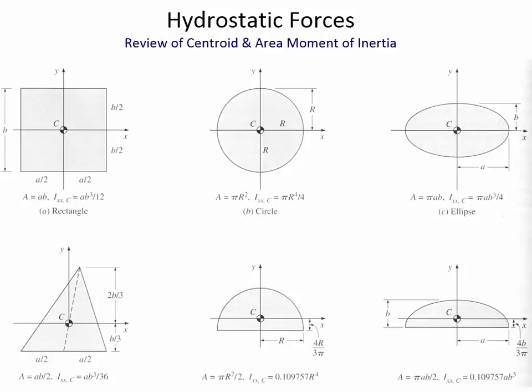You'll need to either memorize these formulas or have them at the ready. In the back of your book in the appendix, it has several area moment of inertia formulas. For a circle, R is the radius, so the formula is π·R⁴ divided by 4. And then there's the ellipse — you may think it's an obscure shape, but it turns out to be far more common than you might expect.